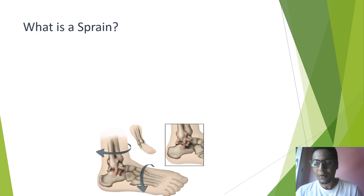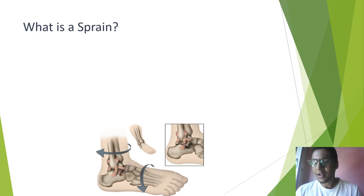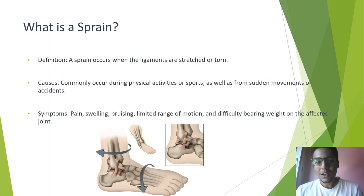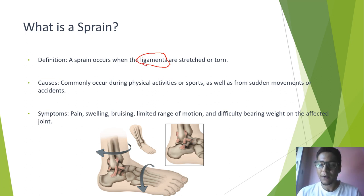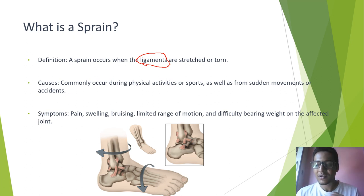When you twist your foot, your ankle, or your knee, or for that matter any part of your body into some unnatural position, there is something called a ligament. A ligament is something which joins your bones together. So if this thing stretches or gets torn apart, you have something which is called a sprain.